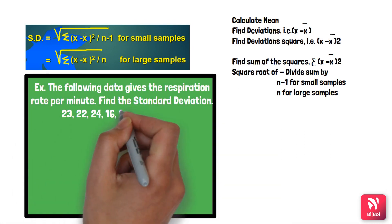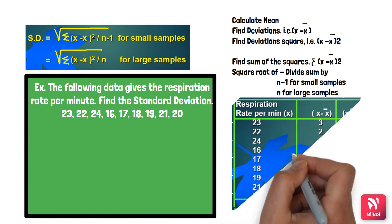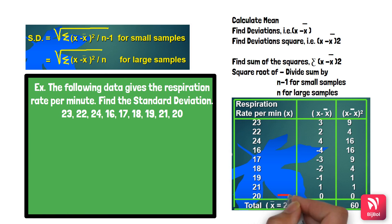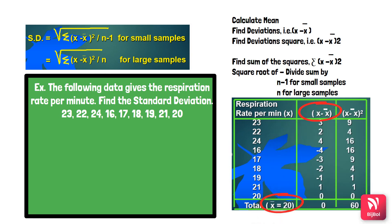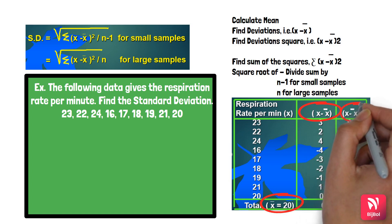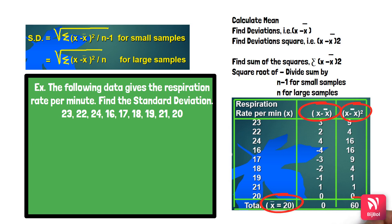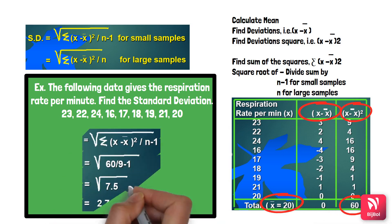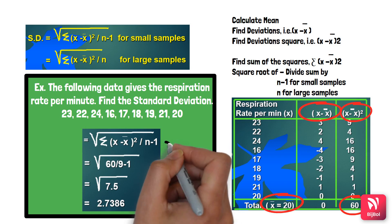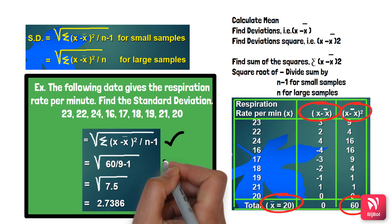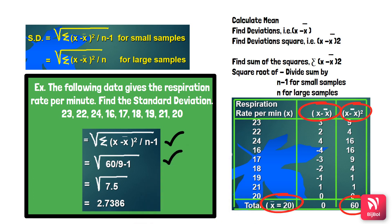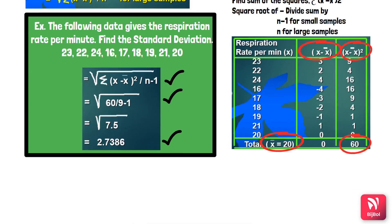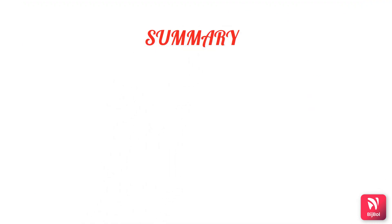Using the same respiration rate example: calculate the mean, find the deviations, square them, sum the squared deviations, then take the square root divided by n−1 (since it is a small sample of 9). The result is √(60/8) = √7.5 = 2.7386, which is the standard deviation.